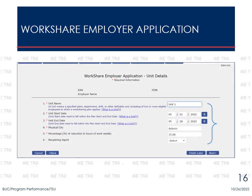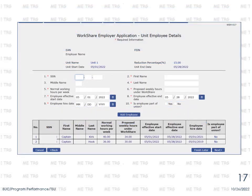On the Unit Details screen, answer all the required questions about the specific plant, department, or other work unit consisting of two or more employees. Helper links will bring up notes to provide further information about the question being asked. Enter all applicable details and select Next. For each WorkShare unit, enter details for each unit employee. Select Add Employee to continue adding to the unit. When all employees have been entered, select Next. Remember, the Finish Later button saves information entered prior to the current screen, so information on the current screen may be lost unless you select Next to continue.